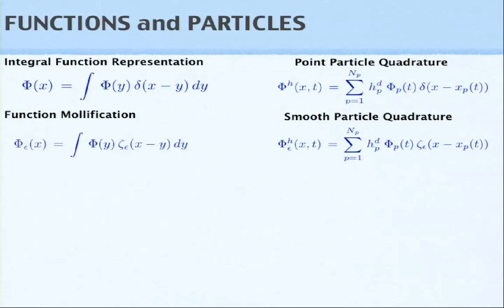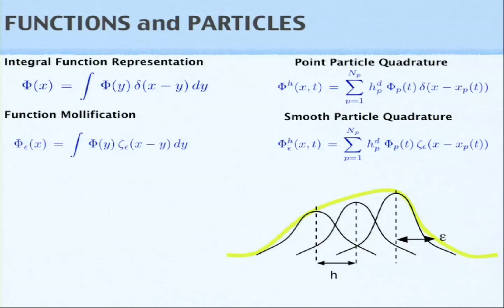If you look at particle methods: you have a function, you represent it as an integral, and if you take that integral and evaluate it quadratively, you get point particles — delta functions. They don't have a size. So if you're looking for information between your particles, you do not have it. A way to bypass this is to modify the delta function to a smooth kernel — and now you have smooth particle methods. You can do this for a function but also for derivative operations.